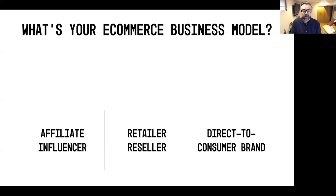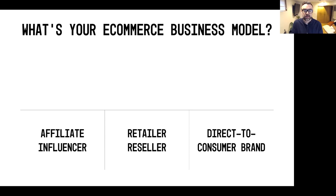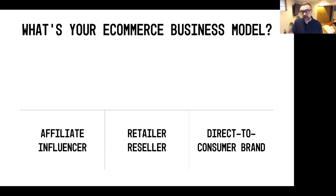Then in the middle, you've got retailers or resellers — your typical historical retail models. Think of the Nordstroms and Walmarts of the world, how shopping malls came to be. They're buying someone else's product and creating an experience for you to come in and buy it. And then on the far right-hand side, the new up and comers are what you call direct-to-consumer brands. The model has been shifting where a lot of brands are skipping over the middlemen — the retailers and affiliates — and going straight to the consumer to sell products and services.